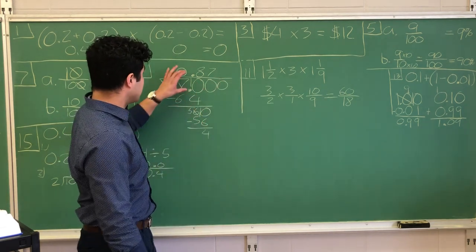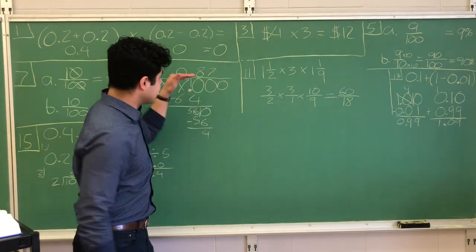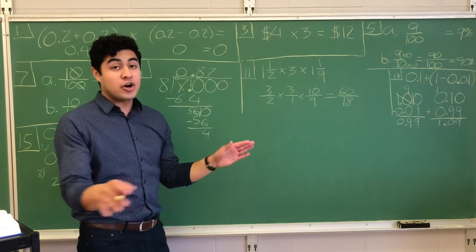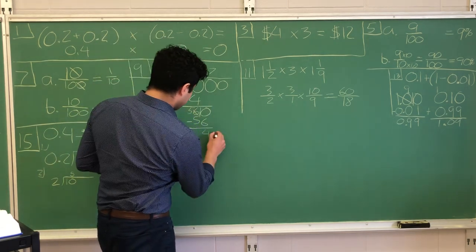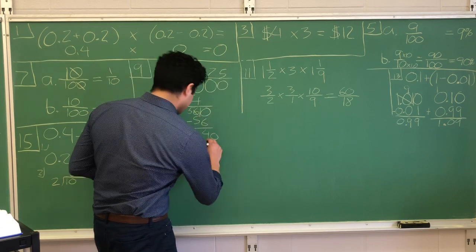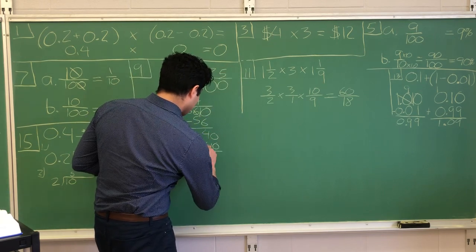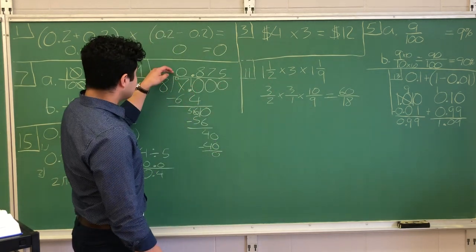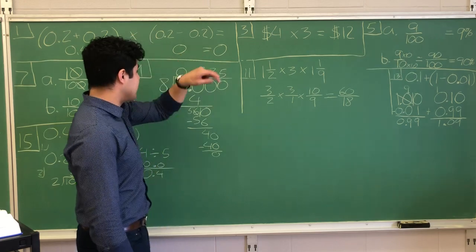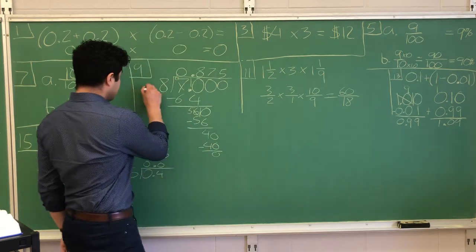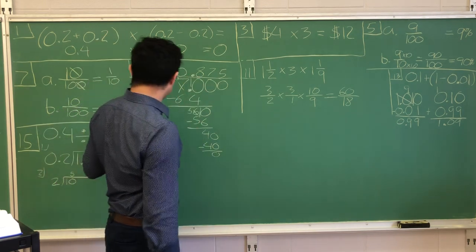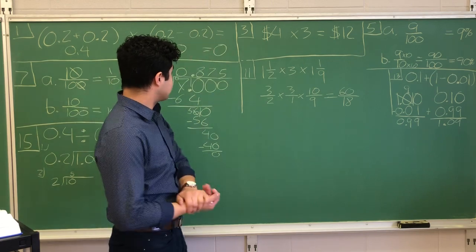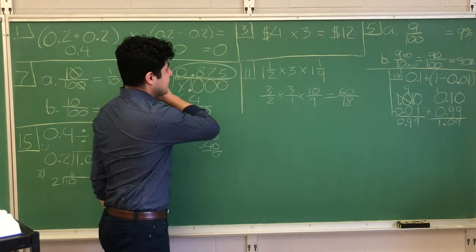Remember when dealing with, when the quotient is a decimal, we can continue adding zeros until there are no longer any remainders. So bring down the zero. Eight goes into 40 five times evenly. Five times eight is 40. I subtract it. There are no more remainders. So there's no more need to continue adding zeros. So my final answer is 0.875. So we've converted seven eighths into a decimal. Seven eighths represented as a decimal would be 0.875. That's your final answer.